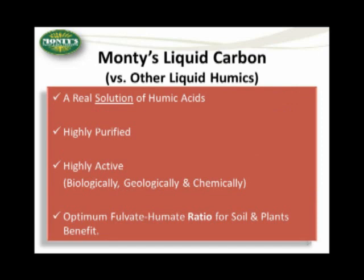Turning to Monty's liquid carbon: what we have is a real solution of humic acid — not a dispersion. Some humics are cloudy with particulates floating throughout, which is more of a dispersion. Ours is a real, highly purified solution that is highly active biologically, geologically, and chemically. Biologically means stimulating biological life forms within the soil. Geologically means spawning the formation of new minerals. Chemically means acting as a catalyzing agent in that soil. We also have the optimum fulvate-humate ratio for a wide range of different soil types and benefits.